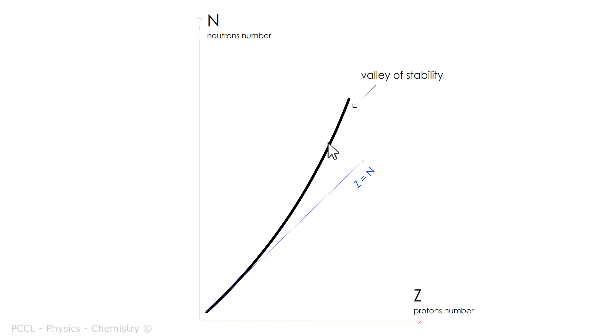I present to you the valley of stability. If we draw the graph of N, number of neutrons, as a function of Z, number of protons, the stable nuclides are found here on this black curve, which deviates from the first bisector Z equals N. Even if both are confused at the beginning for small numbers of mass. Light nuclei.